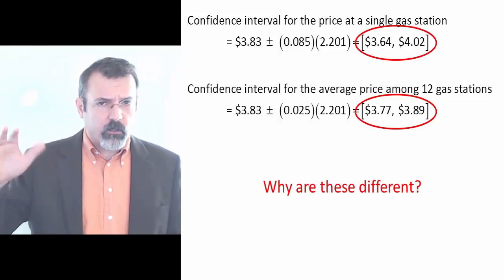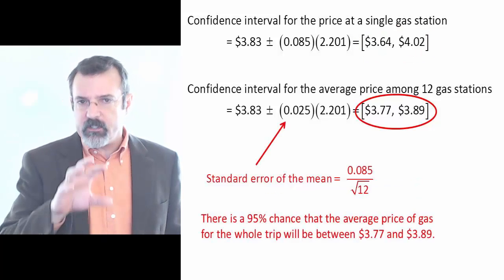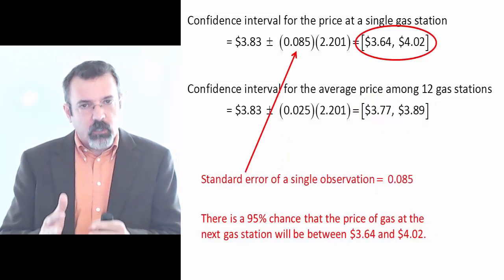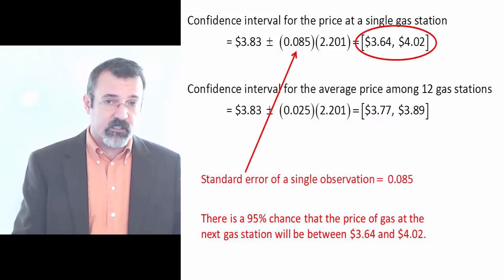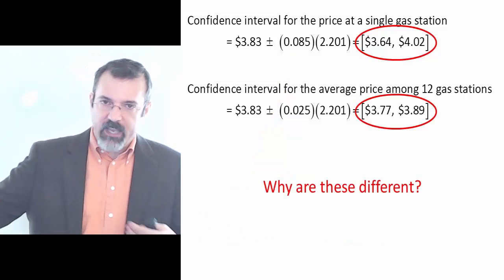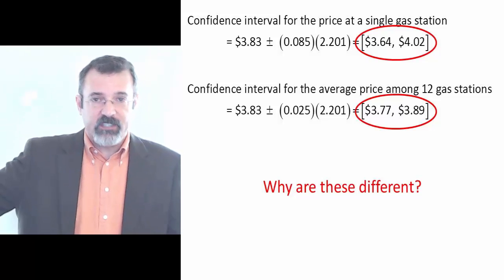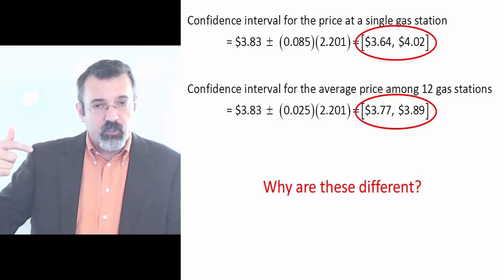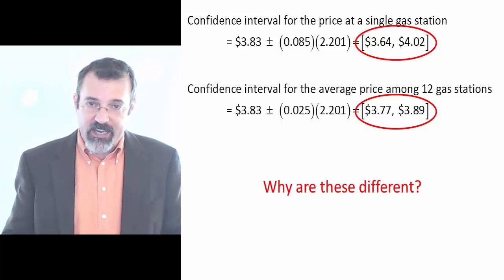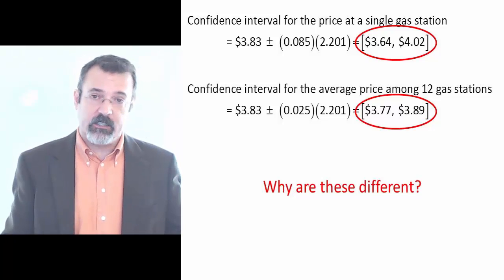So the question is, why are these two confidence intervals different? Notice that the confidence interval for the average price of gas over 12 gas stations is tighter than the confidence interval for the price of gas at a single gas station. The reason is that when you go to 12 gas stations, some of the prices will be higher and some will be lower. The high prices tend to counteract the low prices, so when you average them out, the average price exists within a tighter confidence interval than the price of gas at any single station.